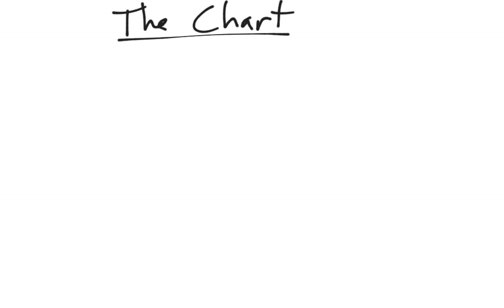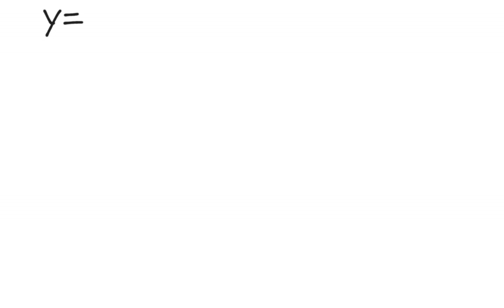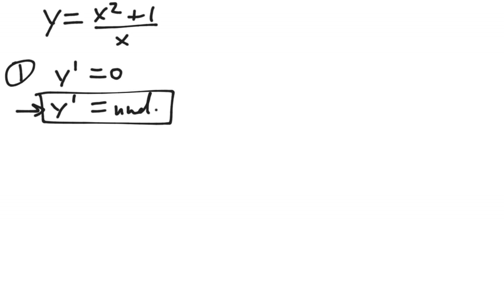To find and categorize relative extrema, we're going to use what I call the chart method. This is a good way to organize everything you need to know. The first step of the chart method is to find all the critical numbers of f. Remember that a critical number is where the derivative is either zero or undefined. This is important — you need to remember this and solve for it.